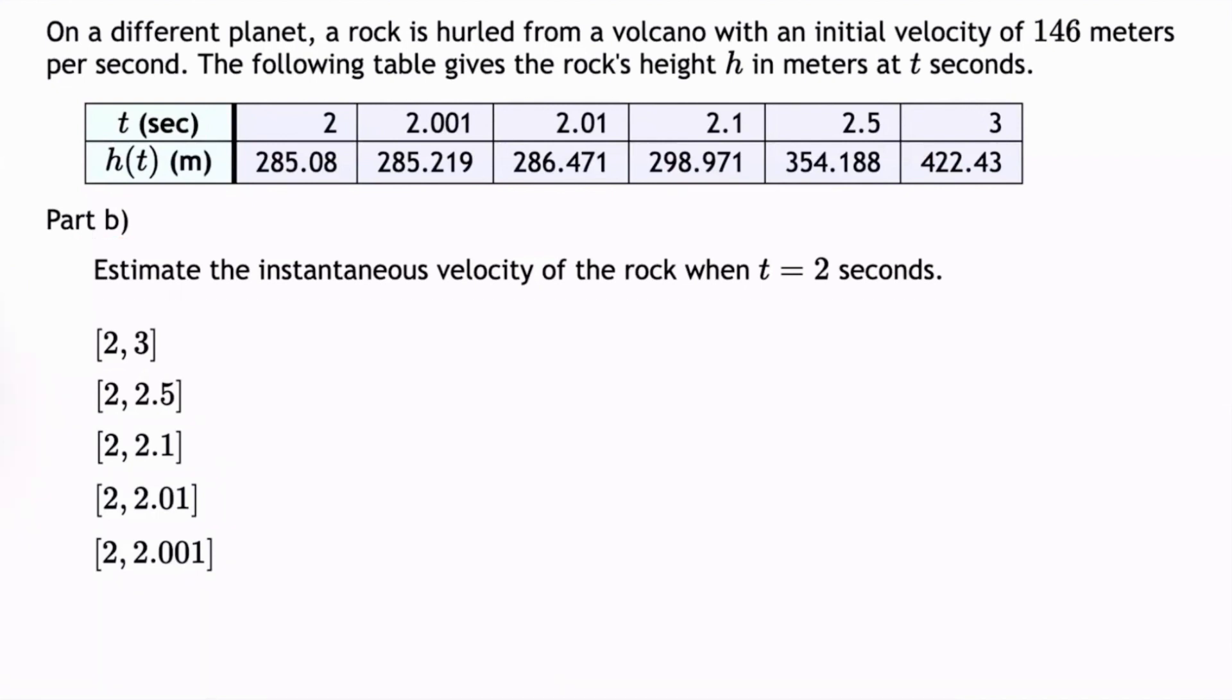So we start by looking at our time intervals, and we notice that the left boundary of each time interval is 2, and this is the time where we need to estimate our instantaneous velocity. We also notice that the right endpoints of each time interval are greater than 2, but decreasing to get closer and closer to 2. So we would say that the right boundaries are approaching 2 from the right.